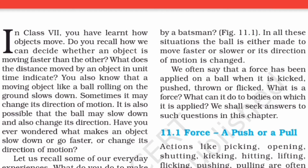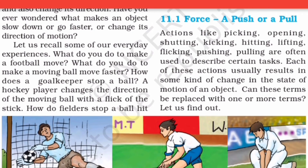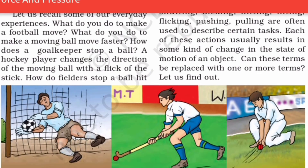What makes an object slow down, go faster, or change direction? That is the applied force. When a bowler throws the ball and the batsman hits it with the bat, the direction of the ball changes. A moving object can be brought to rest, or from rest it can be brought to motion. A hockey player changes the direction of a moving ball with a flick of the stick — the direction, motion, or rest of an object can all be changed by applying force.